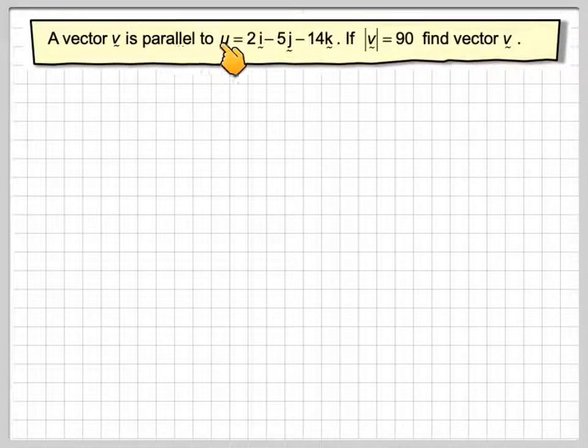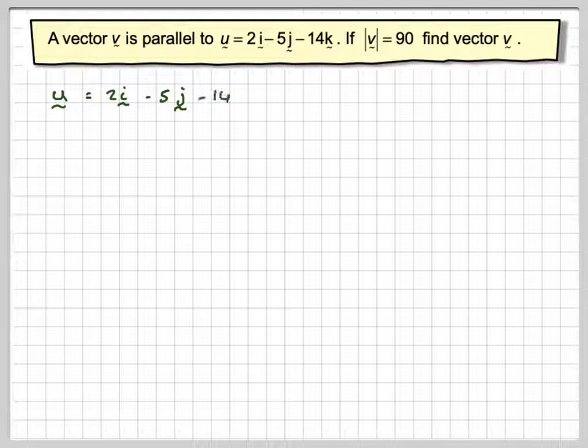Vector V is parallel to U = 2i minus 5j minus 14k. If the magnitude or the length of V is equal to 90, find vector V. So we've got U is 2i minus 5j minus 14k.